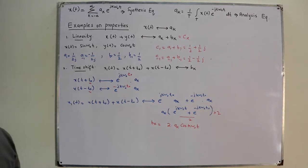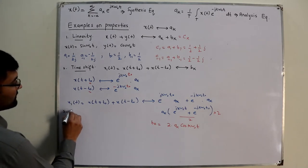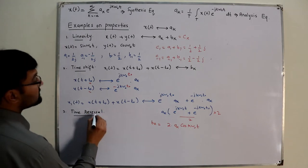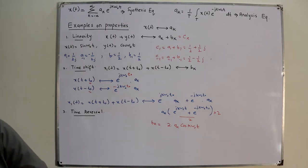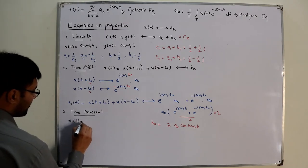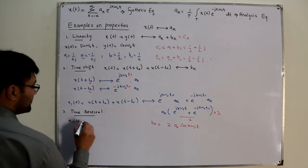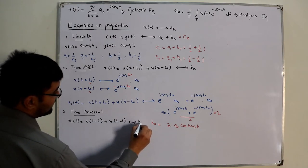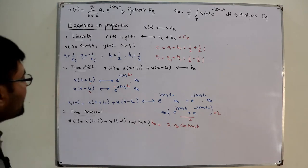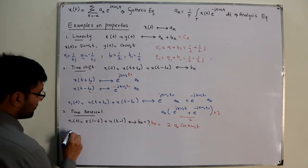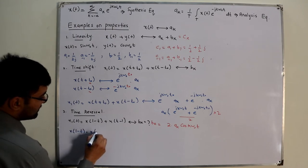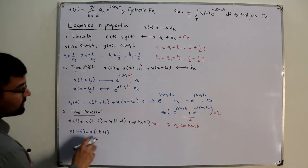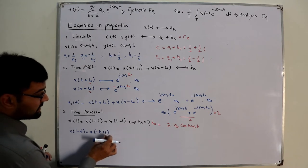The third property is time reversal. If x(t) has Fourier coefficients ak, and we need to find the Fourier coefficients of x₁(t) = x(1 - t) + x(t - 1), we find bk. For x(1 - t), we can write it as x(-t + 1), which involves both a time reversal and a time shift.